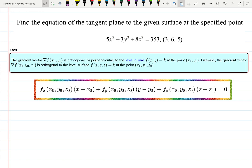Let's find the equation of a tangent plane to the surface 5x squared plus 3y squared plus 8z squared equals 353 at the point (3, 6, 5).